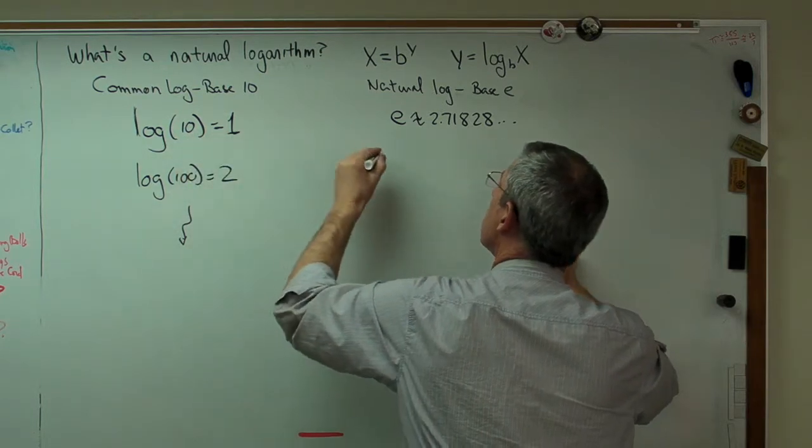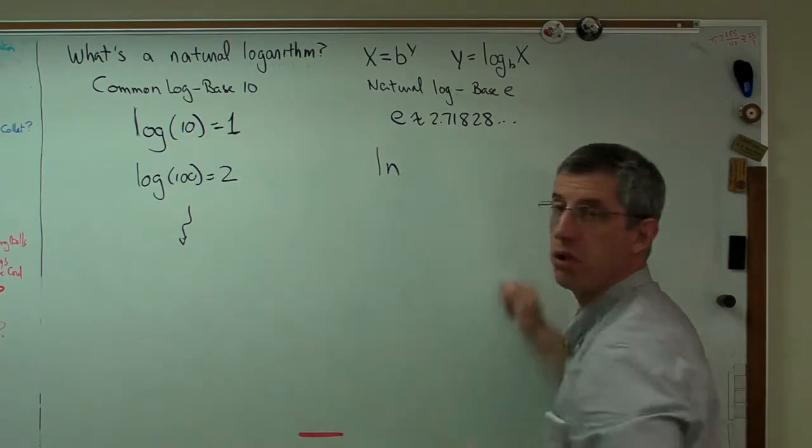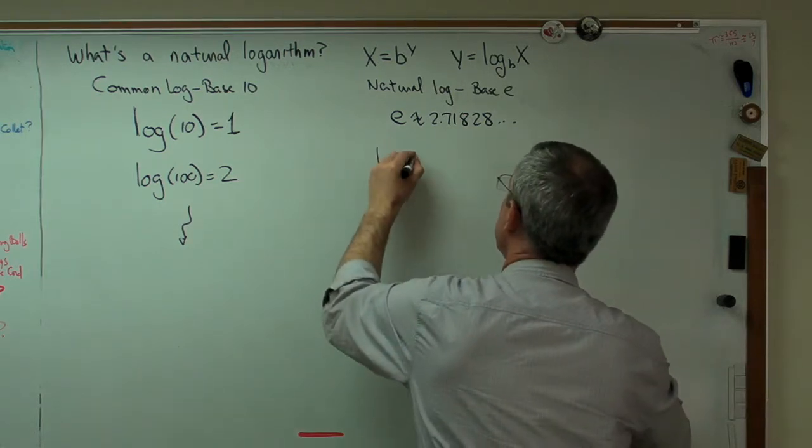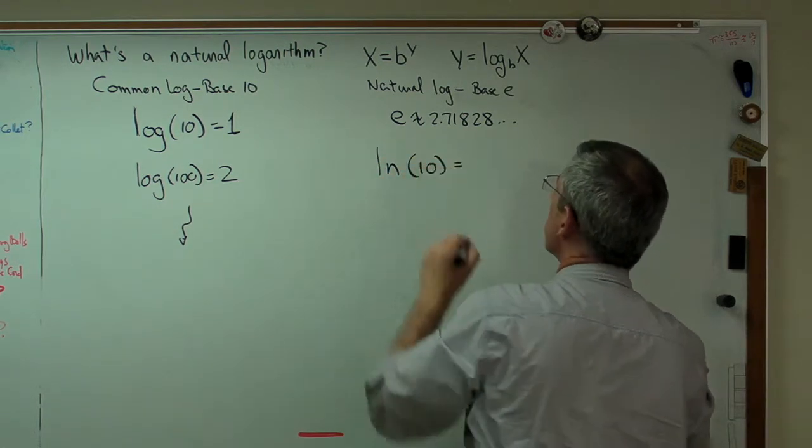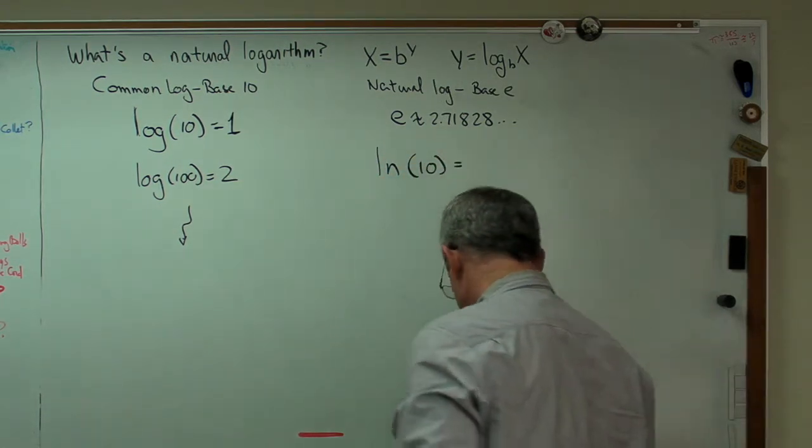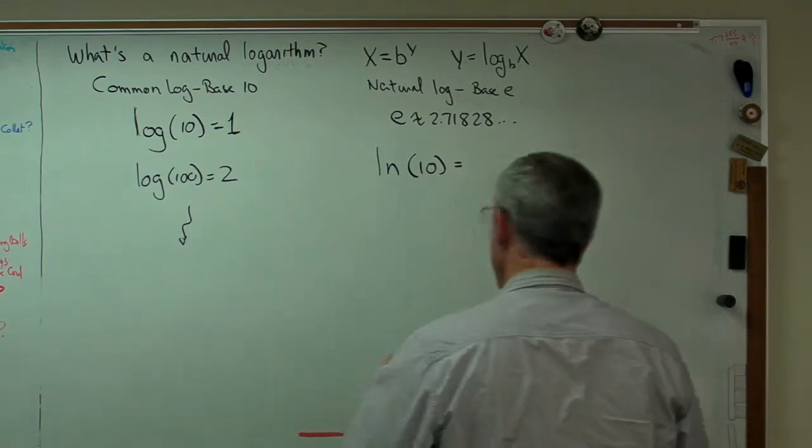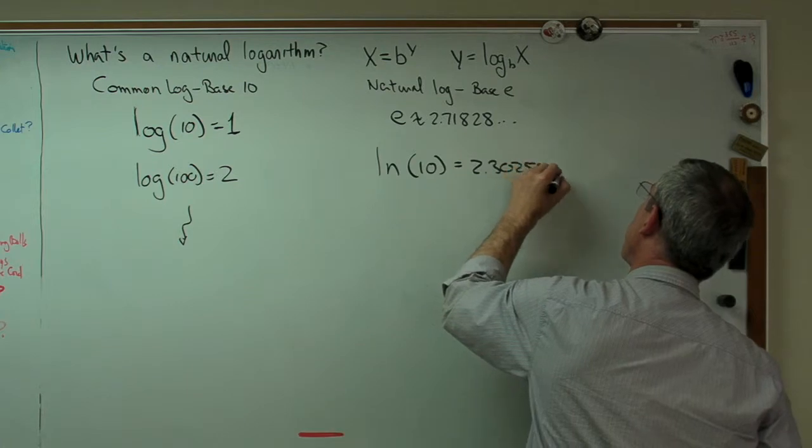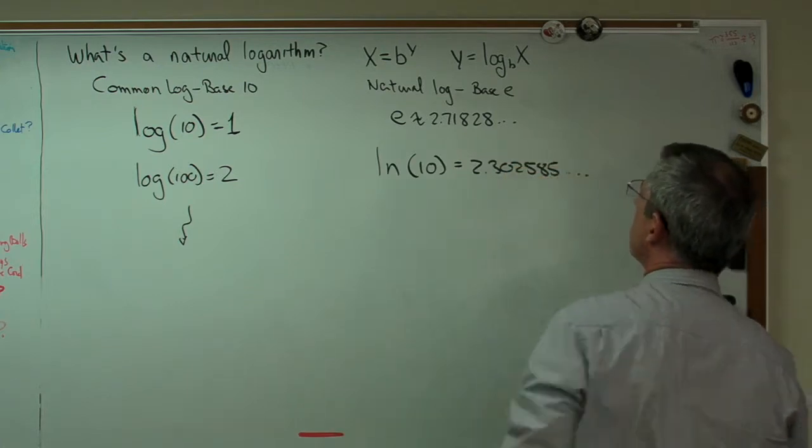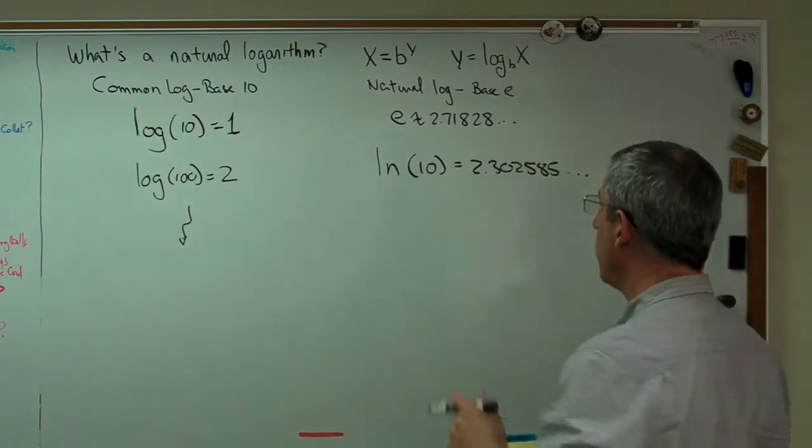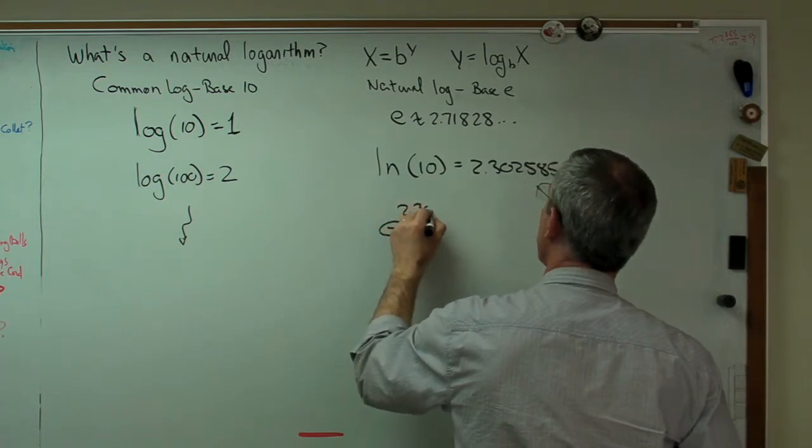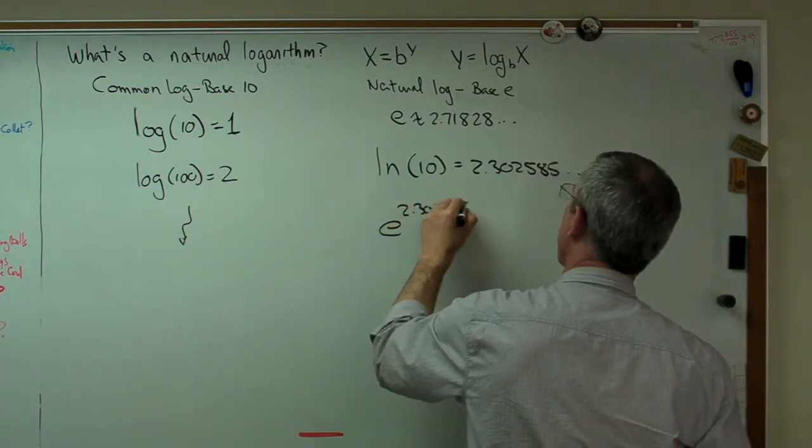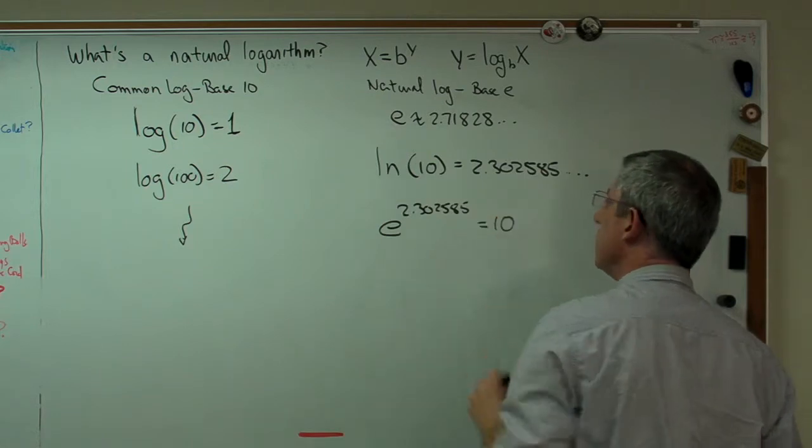Common log of 10 is 1. The natural log, which we usually write out as ln of 10, is not 1 anymore. Because this isn't 10. This is a number smaller than 10. This turns out to be 2.302585, and it goes out. But that's enough decimal places there. That means E to the 2.302585 power equals 10.